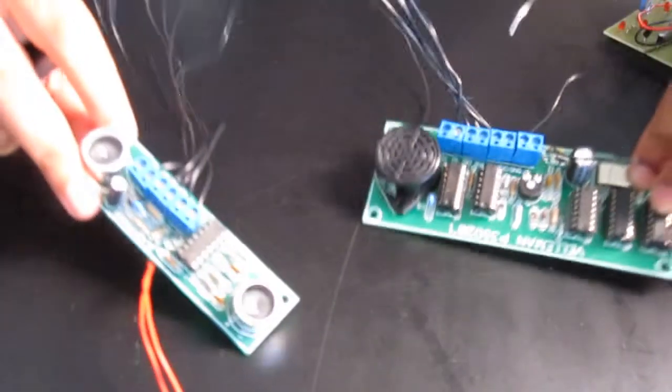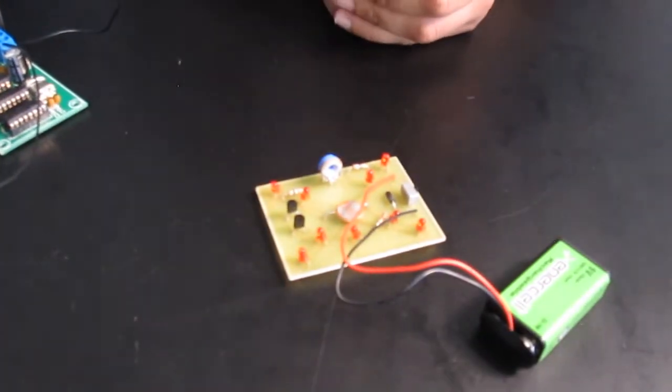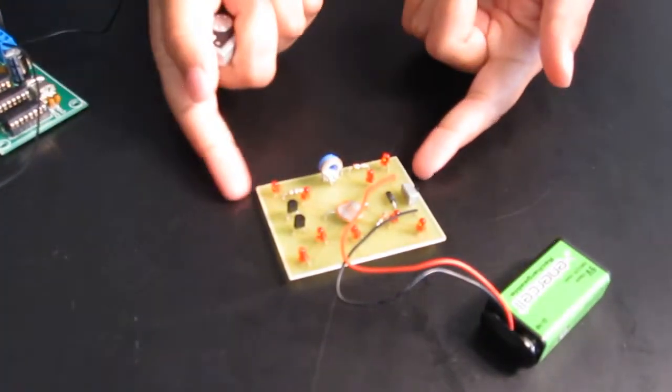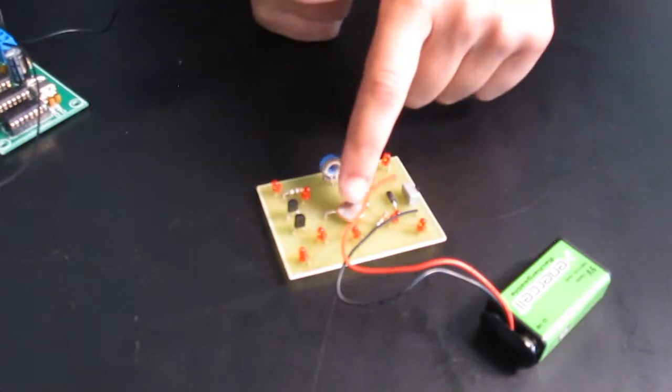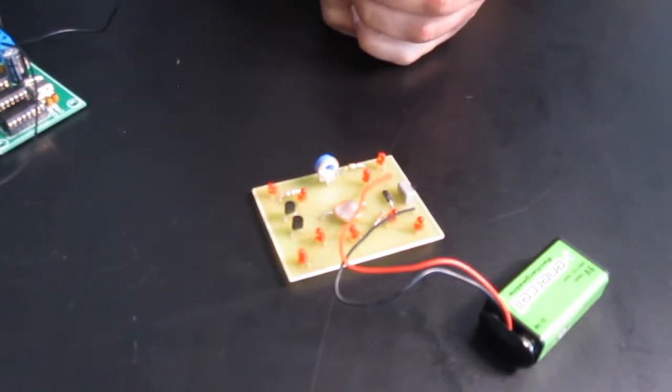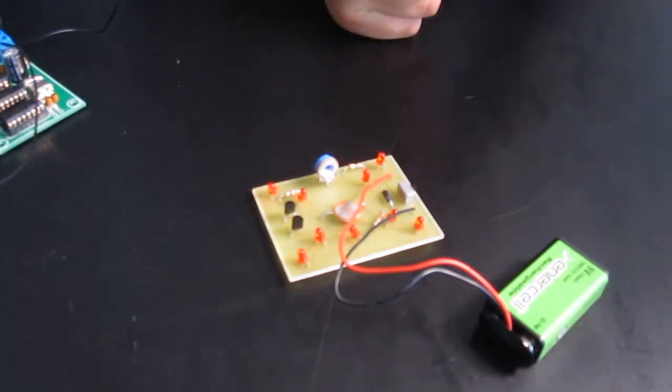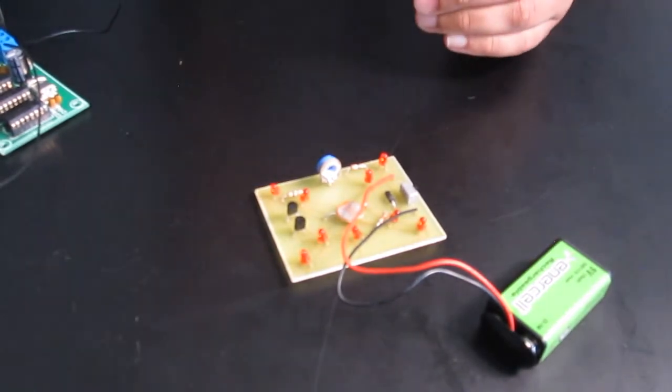We're not really sure why the parking sensor wasn't working. So then I went on to a different project, which is the laser target. Some additional parts in here were CDSs, and basically they work. They're very high resistors, but the resistance decreases as the light intensity increases.